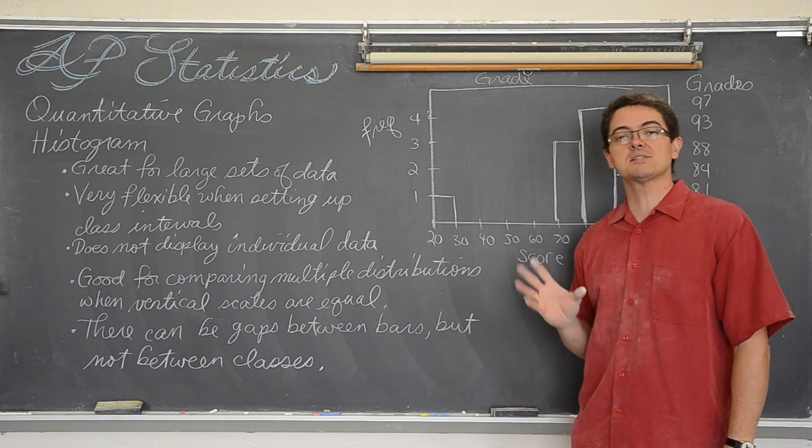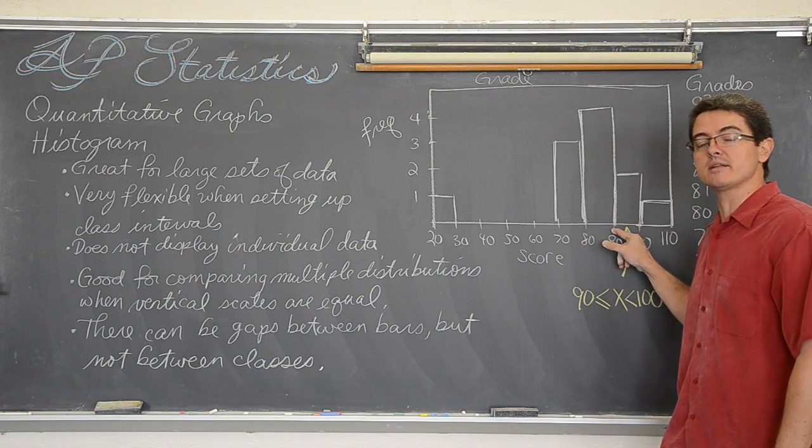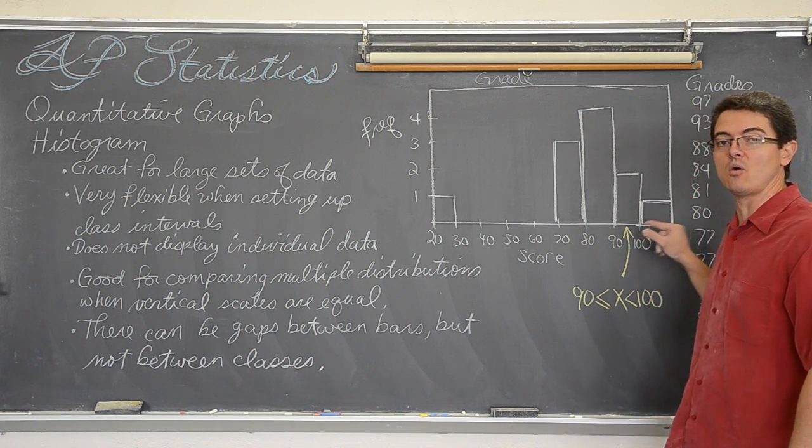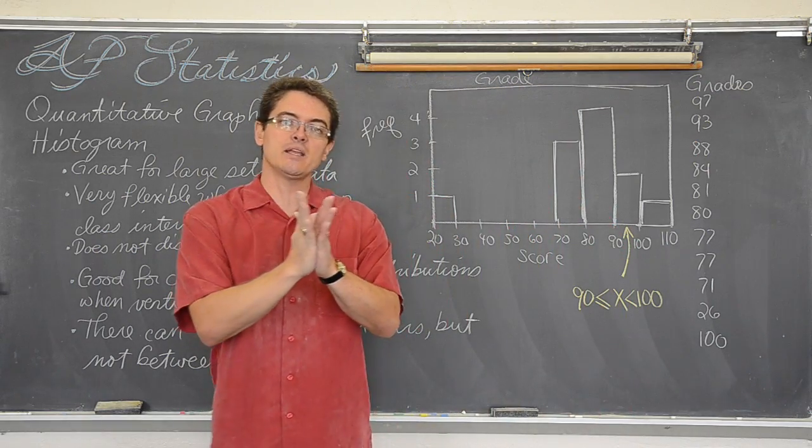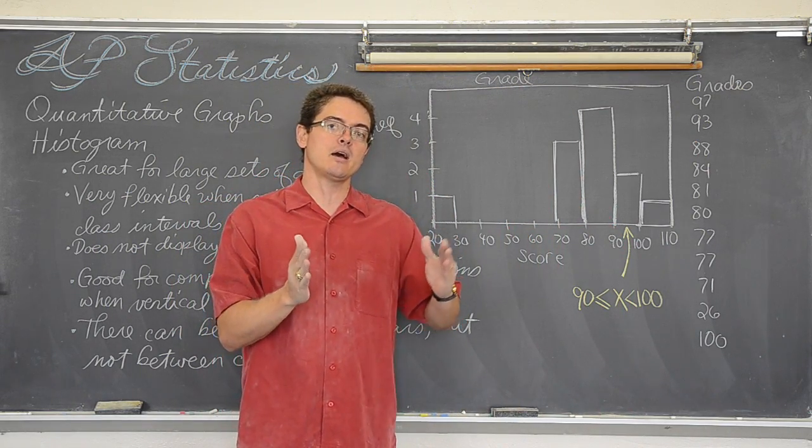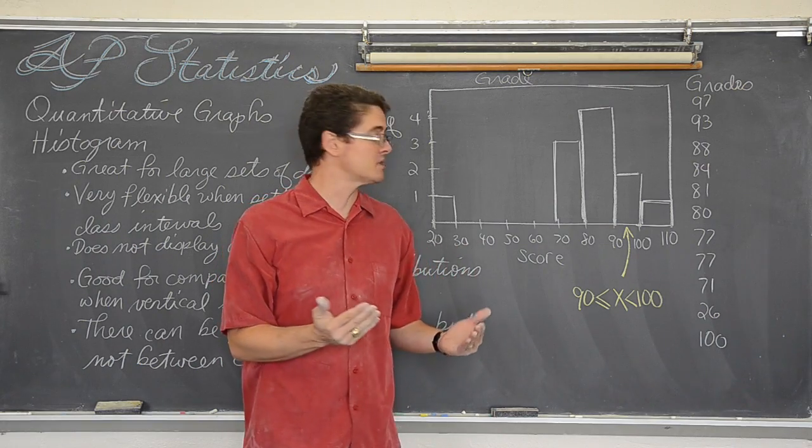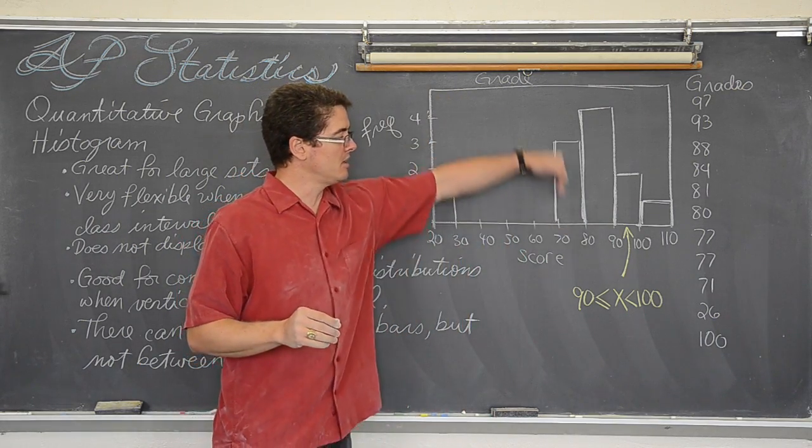But the 70 runs right into the 80, which runs right into the 90, which runs right into the 100, and so on. So my class intervals are jammed right against each other. That means that if there is a 99.99999 that doesn't get lost, because the classes are jammed up. No place for data to fall in between. We are representing a continuous quantitative variable.